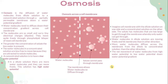Osmosis is the diffusion of water molecules from a dilute solution to a concentrated solution through a partially permeable membrane, down the water potential gradient. Water molecules tend to diffuse down the concentration gradient across the cell membrane. Water molecules are very small and carry tiny electrical charges called dipoles, so they move quickly through the phospholipid bilayer. The greater the concentration of solute, the less free water is present, as water molecules in a concentrated solution are attracted to solute molecules. This means a concentrated solution has a low water potential.